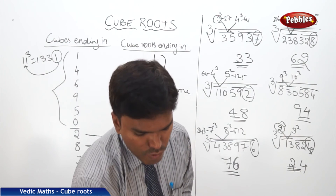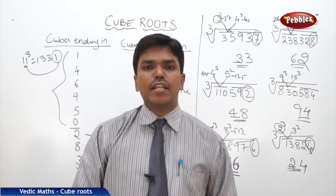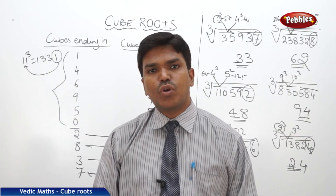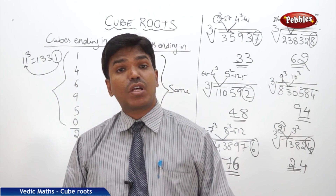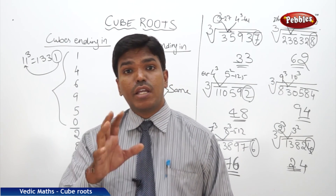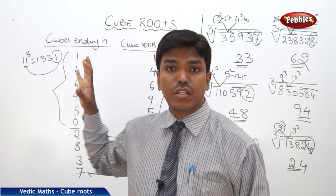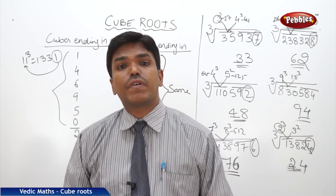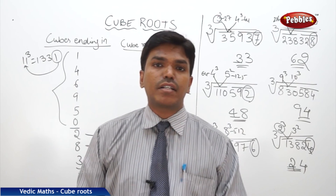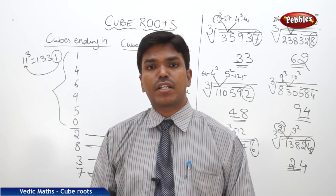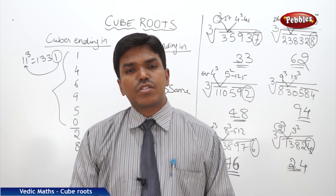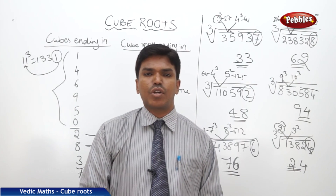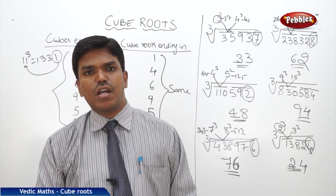So like this, we can easily solve cube roots. The condition is that you should be thorough with the digits table given on the board, thorough with squares until 30, and cubes until 10. With these prerequisites, calculating cube roots becomes very straightforward.